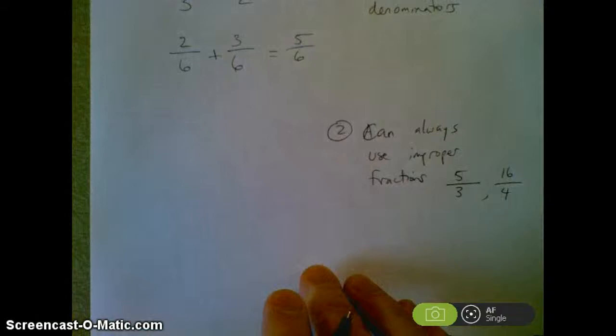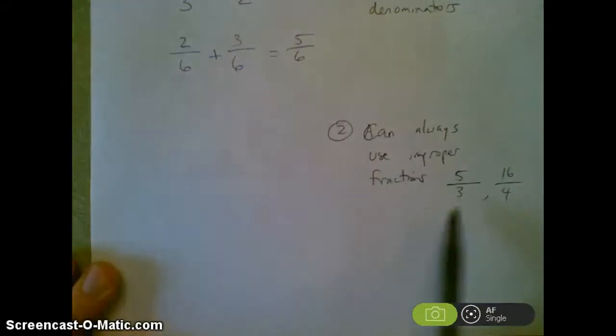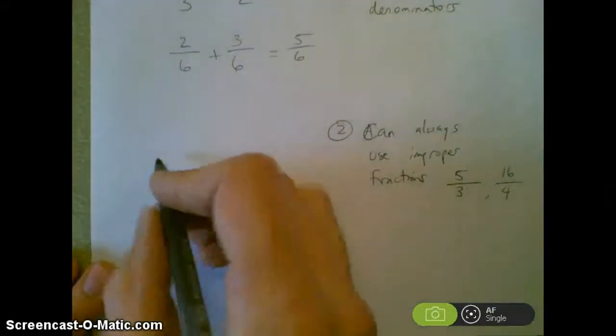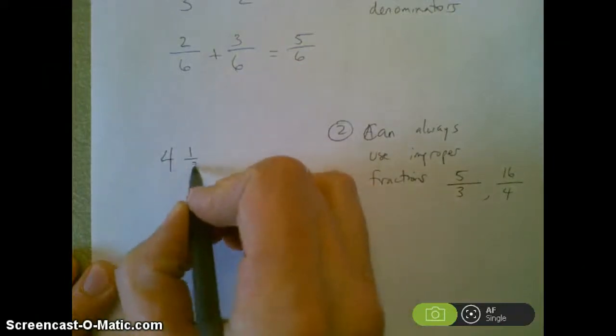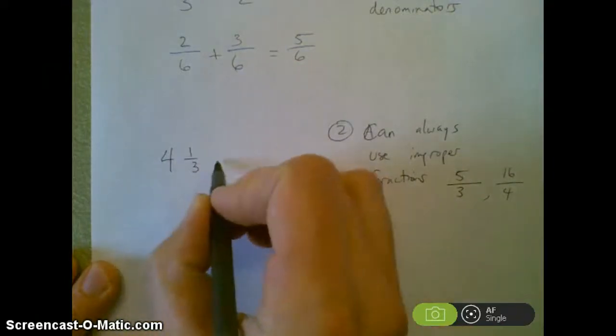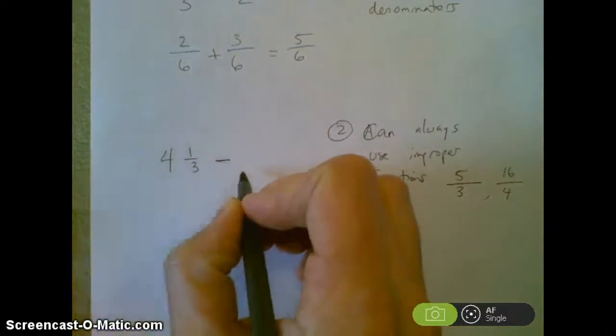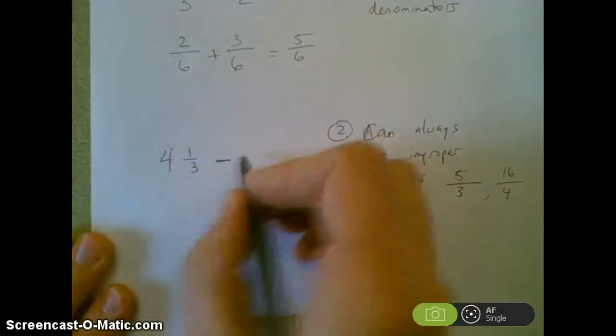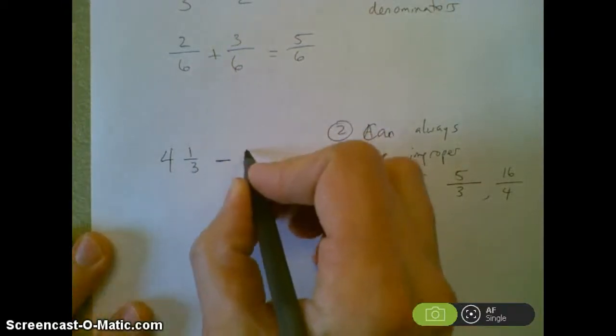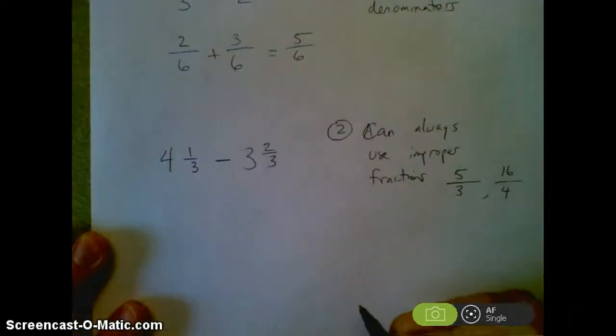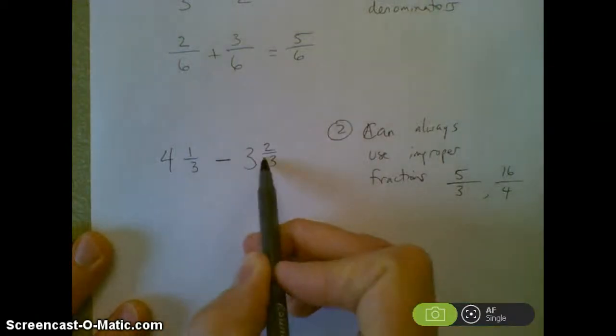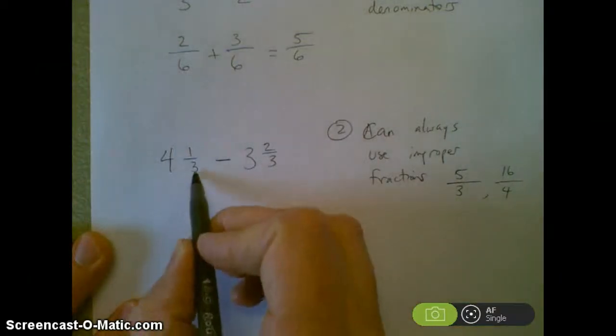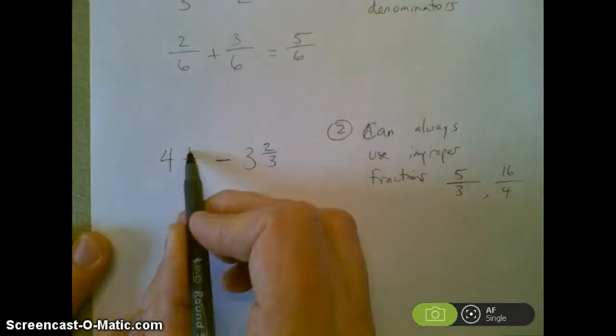I can always use those and then convert back to a mixed number. So let's say I have 4 and 1/3 and I'm subtracting, I'm just going to make the denominators the same to save us time here, subtracting 3 and 2/3. One way that I can solve this is to make both of these numbers improper fractions. So 3 times 4 is 12, plus 1 is 13.